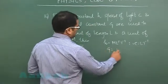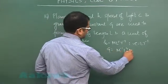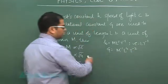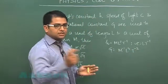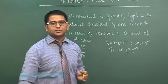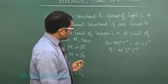Speed of light is quite obviously l t minus 1. Gravitational constant is m minus 1, l 3, t minus 2. You could readily calculate this from f equals g m1 m2 divided by r square.